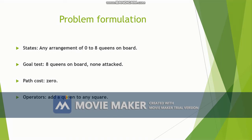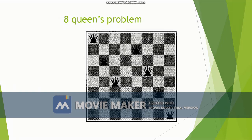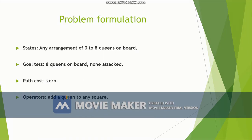For the 8-queens problem, the path cost is zero because the task is simply to place queens on the board — you are not performing movement actions. If a placement doesn't work, you just remove the queen and try again. The operator is: add a queen to any square.